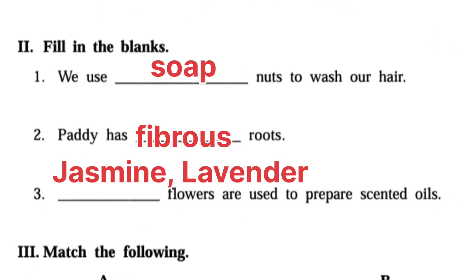Next, fill in the blanks. First one: we use dash nuts to wash our hair — soap nuts. Second one: paddy has dash roots — fibrous roots. Next one: dash flowers are used to prepare scented oils — jasmine, lavender.